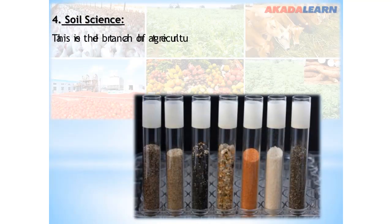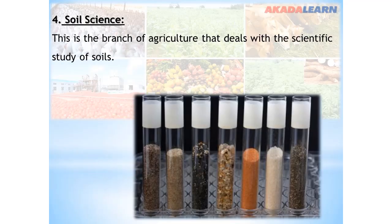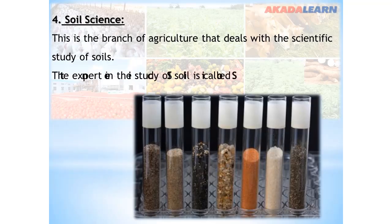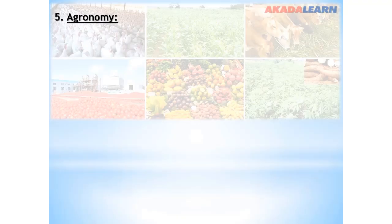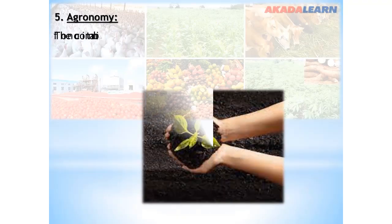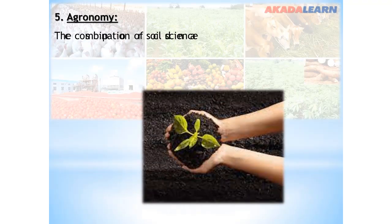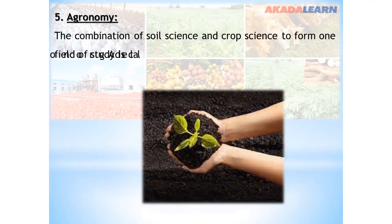Soil science deals with the scientific study of soils. The expert in the study of soil is called the soil scientist. The next one is agronomy. The combination of soil science and crop science to form one field of study is known as agronomy.